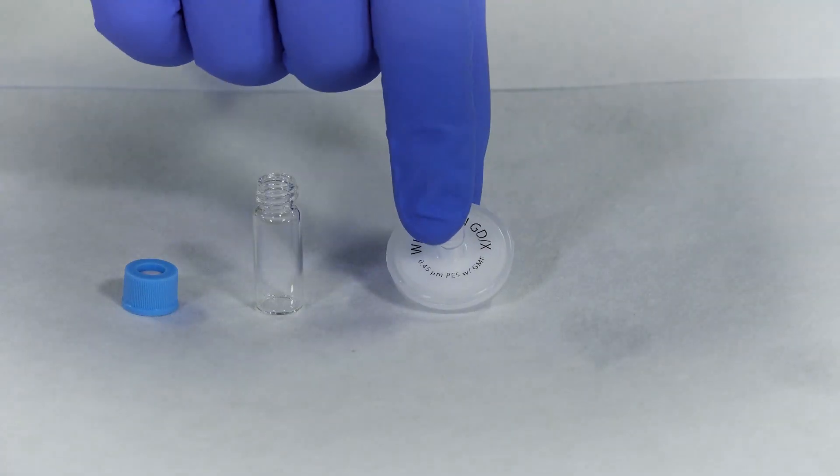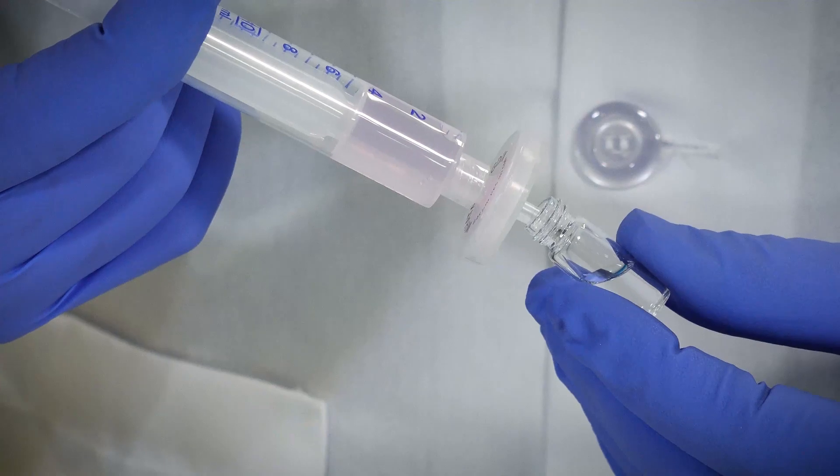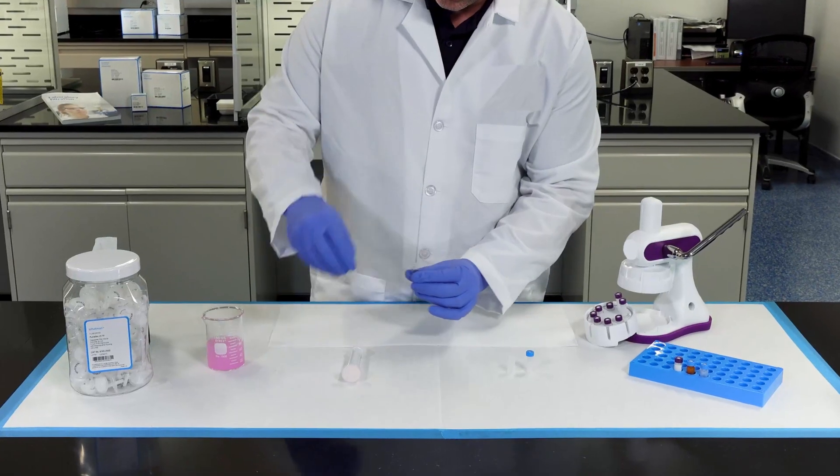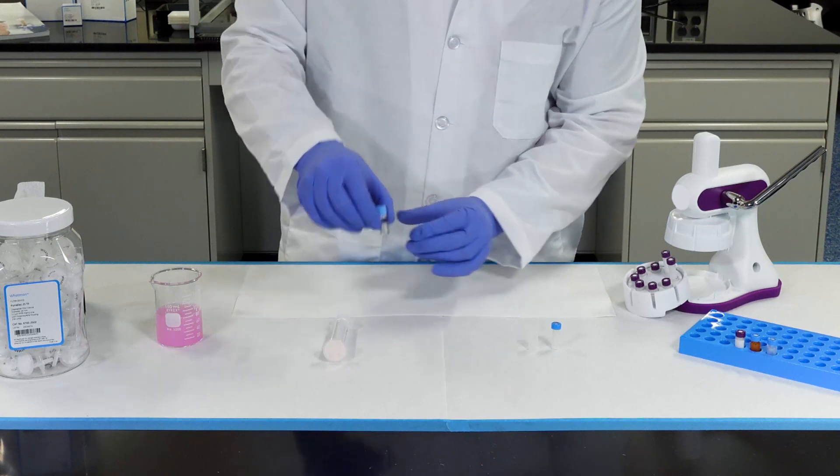Now retrieve the filter and attach it to the syringe. Retrieve the vial and filter your sample. Now attach the cap and your filtered sample using the conventional approach is ready for sample injection.